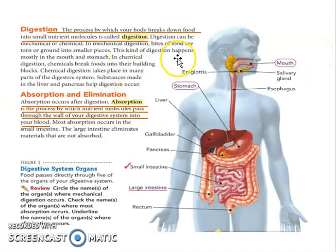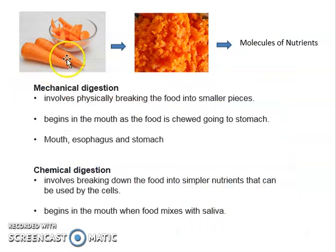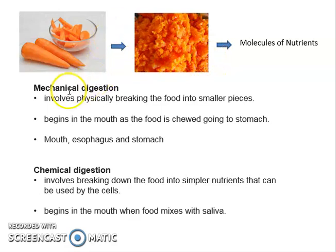There are two types of digestion. Digestion can be mechanical or chemical. When we are talking about mechanical digestion, bites of food are torn or ground into smaller pieces. This cutting or breaking of food is called mechanical digestion. Why is it mechanical? Because mechanical digestion involves the physical breaking of food — physical meaning you can still see it.